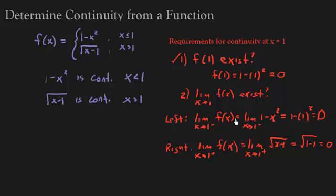So the left and right hand limit equals 0. So does the limit, the general limit, as x approaches 1 exist? It sure does. And it's going to equal 1. I'm sorry, equals 0. I don't know why I keep saying 1. Okay, so that's the second condition. Let's go ahead and go to the third condition.